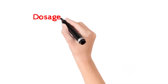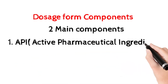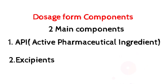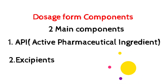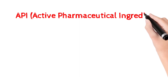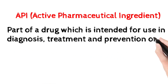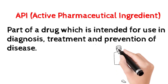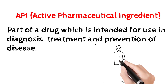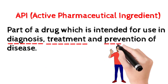A dosage form has two main components. The first one is API — Active Pharmaceutical Ingredient. API is the part of the drug which is intended for use in diagnosis of disease, treatment of disease, and prevention of disease. It is the main part of the drug that carries pharmacological and therapeutical activity.